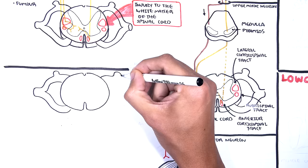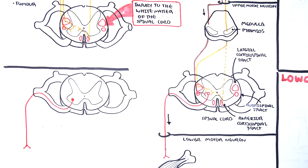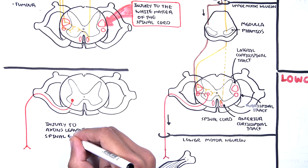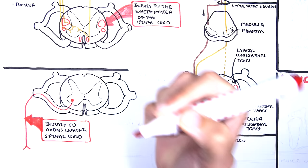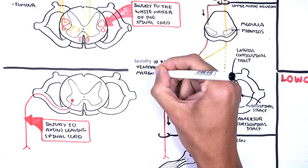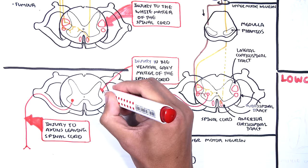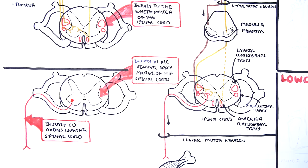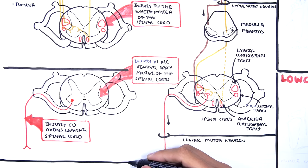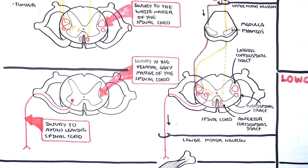Lower motor neurons are the neurons which transmit signals from the spinal cord or brainstem to the skeletal muscle. Lower motor neuron lesions are caused by any damage along this tract. For example, injury to the axons leaving the spinal cord can cause lower motor neuron lesions. Injury to the spinal cord itself, particularly to the ventral gray matter — the anterior horn of the spinal cord — can also cause lower motor neuron lesions, because this is where the lower motor neurons start. Through doing a proper neurological examination, you can figure out whether a motor disorder is due to an upper or lower motor neuron lesion.